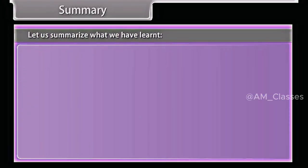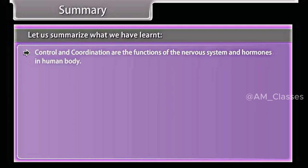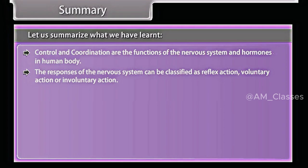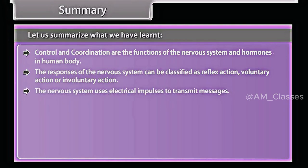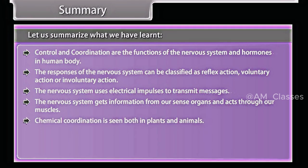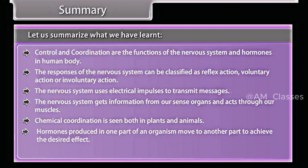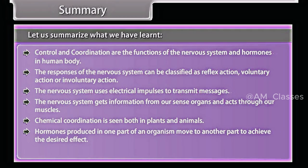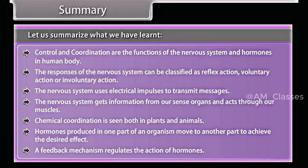Control and coordination are the functions of the nervous system and hormones in the human body. The responses of the nervous system can be classified as reflex action, voluntary action, or involuntary action. The nervous system uses electrical impulses to transmit messages and gets information from our sense organs and acts through our muscles. Chemical coordination is seen both in plants and animals. Hormones produced in one part of an organism move to another part to achieve the desired effect, and a feedback mechanism regulates the action of hormones.